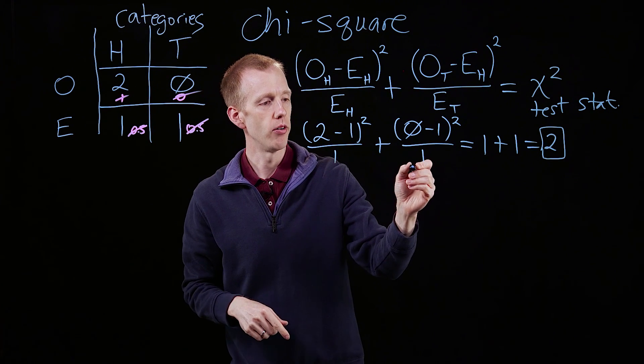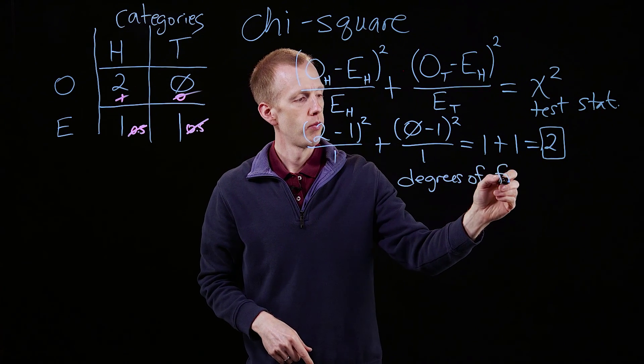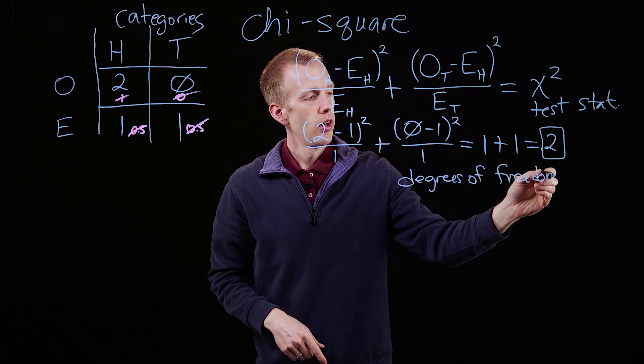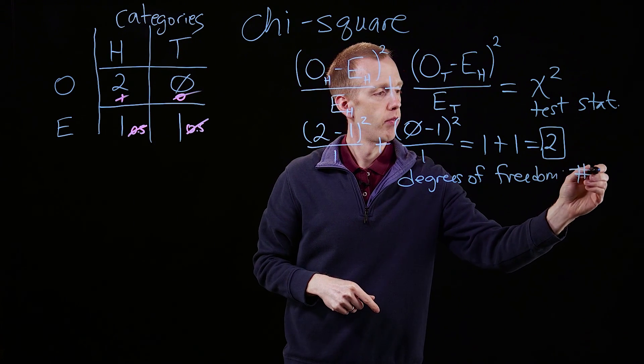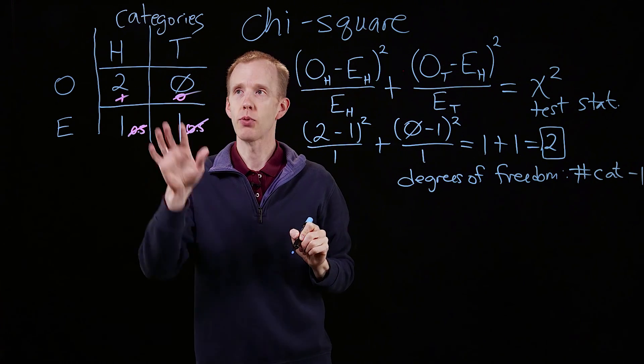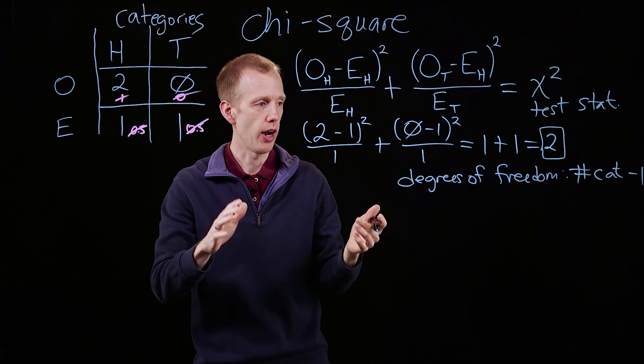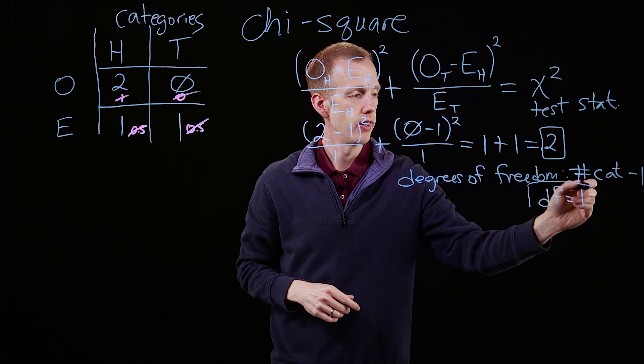And that is, we need to know the number of degrees of freedom, which is the number of categories minus one. So in this case we had two categories, heads or tails, subtract one. Degrees of freedom equals one, in this case.